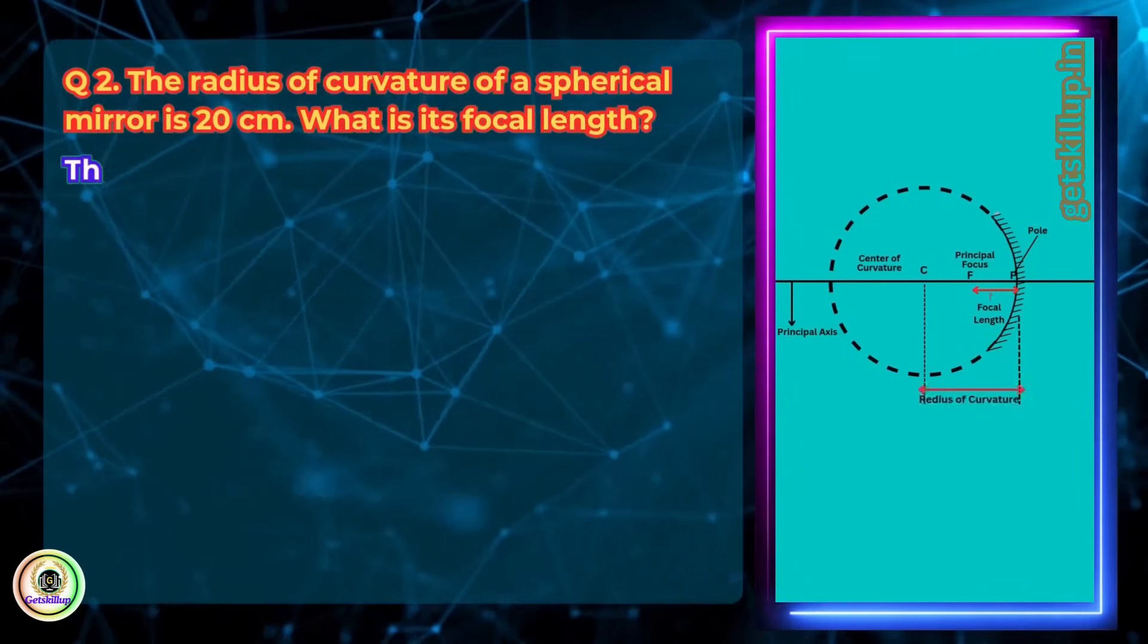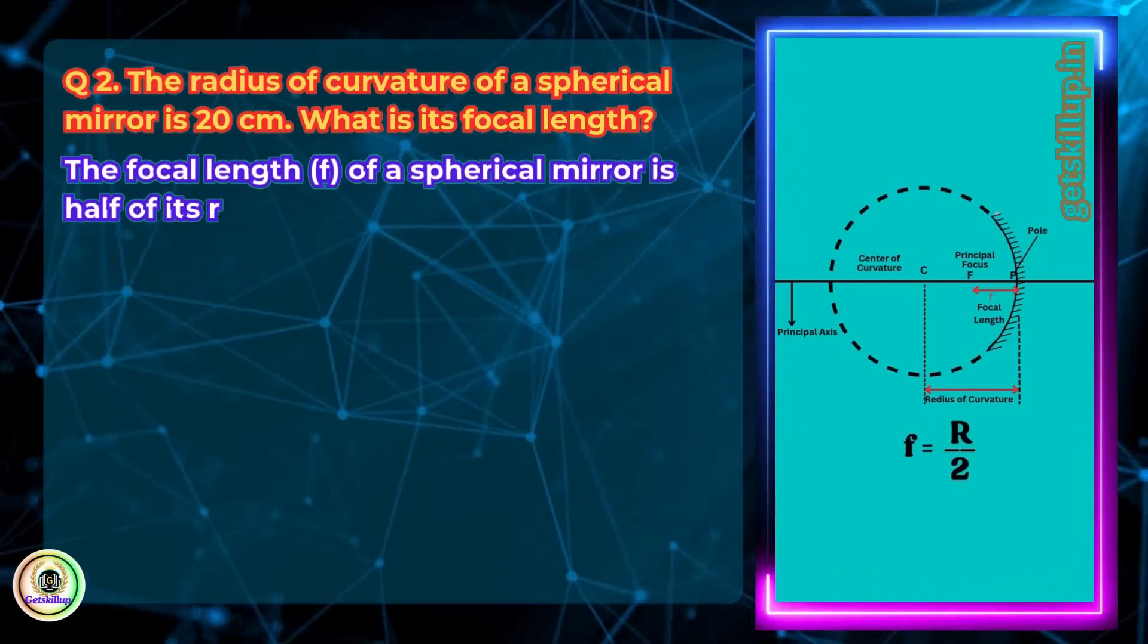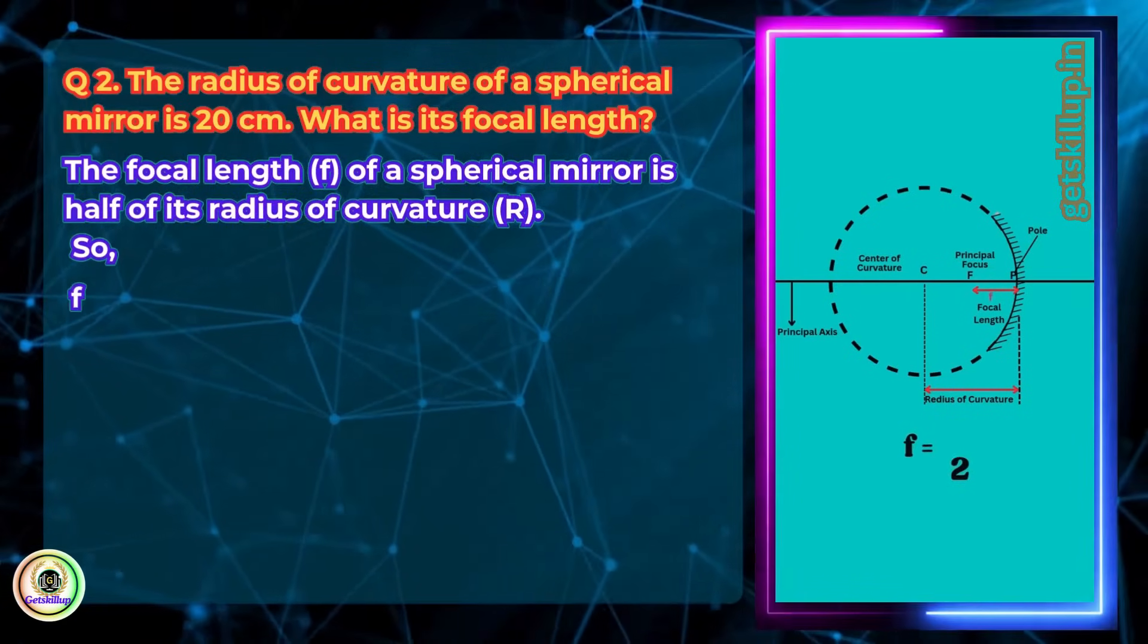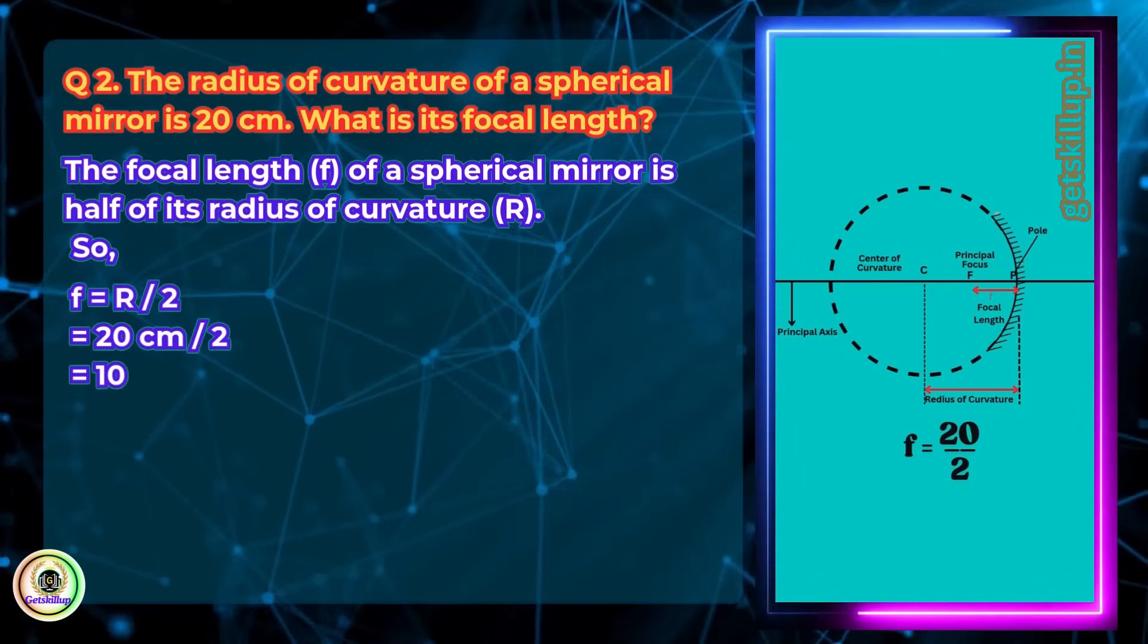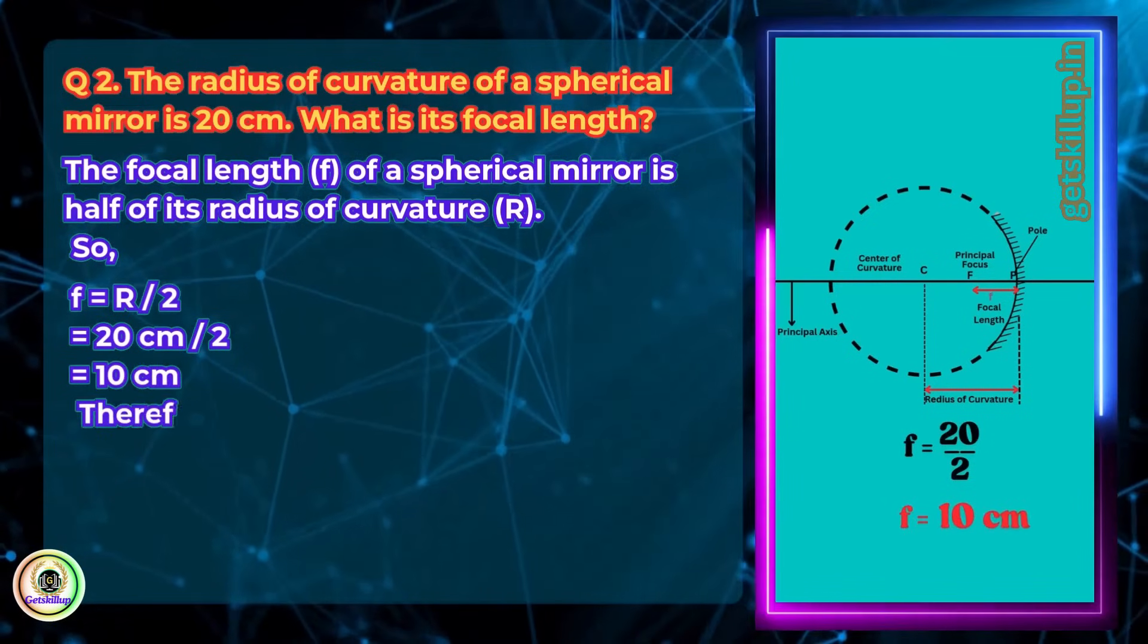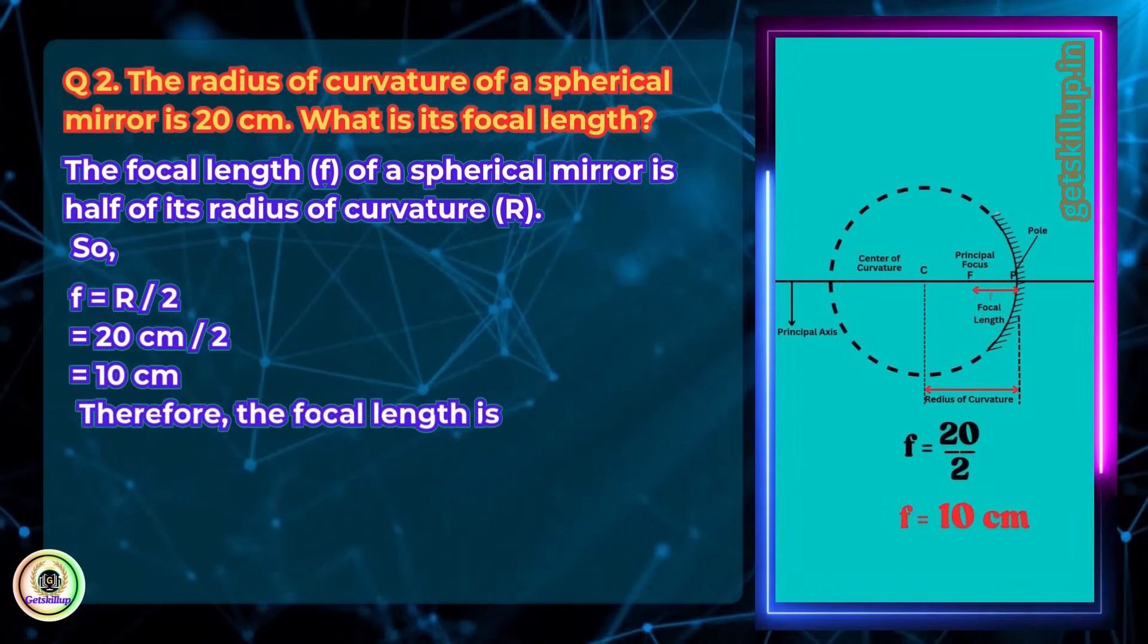The focal length f of a spherical mirror is half of its radius of curvature r. So f equals r by 2, f equals 20 cm by 2, which equals 10 cm. Therefore, the focal length is 10 cm.